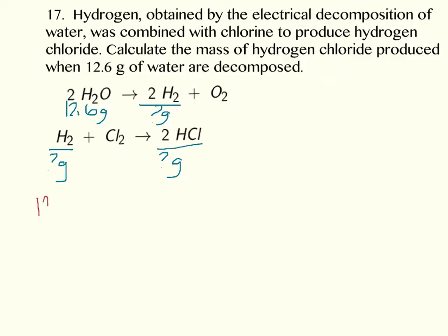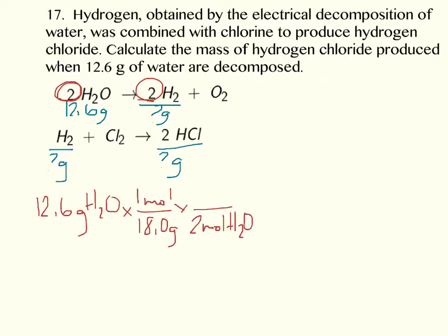Start with what you know, 12.6 grams of water. Using that 12.6 grams of water, water weighs 18.0 grams for every one mole. So the mole to mole ratio is going to be the hydrogen here, the water here to the hydrogen there. Starting from water going to hydrogen within the same one reaction. For every two moles of water, two moles of hydrogen will be produced.